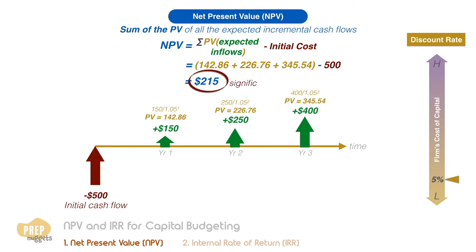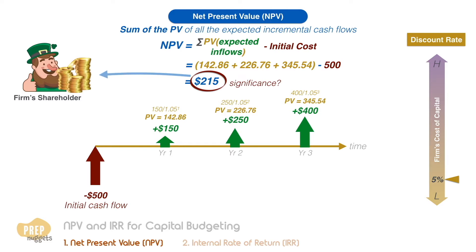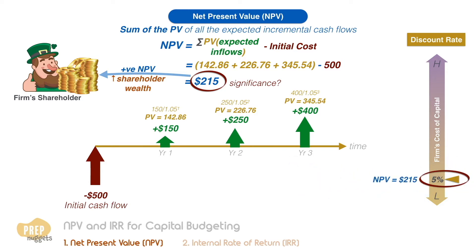So what is the significance of this? The NPV can be viewed as the expected effect on shareholder wealth. When it is positive, shareholder wealth is expected to increase. An NPV of $215 means that the firm value will increase by this amount in today's dollars, if the cash flows pan out as expected. Do note that this is based on the assumption that the firm finances this investment at a borrowing cost of 5%.